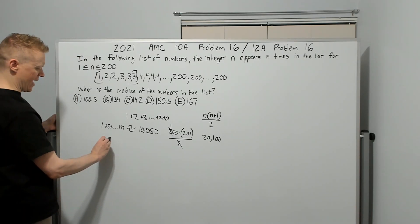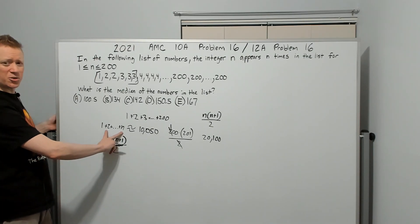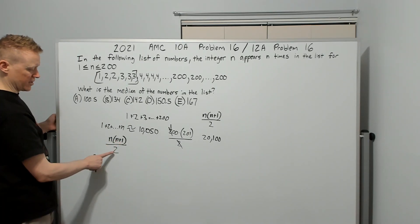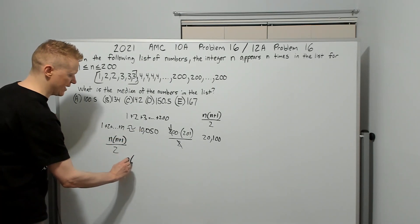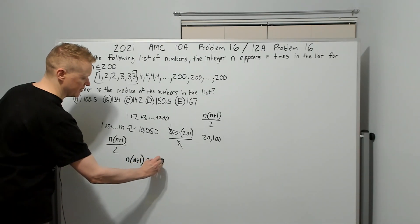If we add n times (n+1) over 2, because this also represents how many numbers are in the list, I want it to be approximately that. So I'm going to multiply by 2 and get n times (n+1) is going to be approximately 20,100.